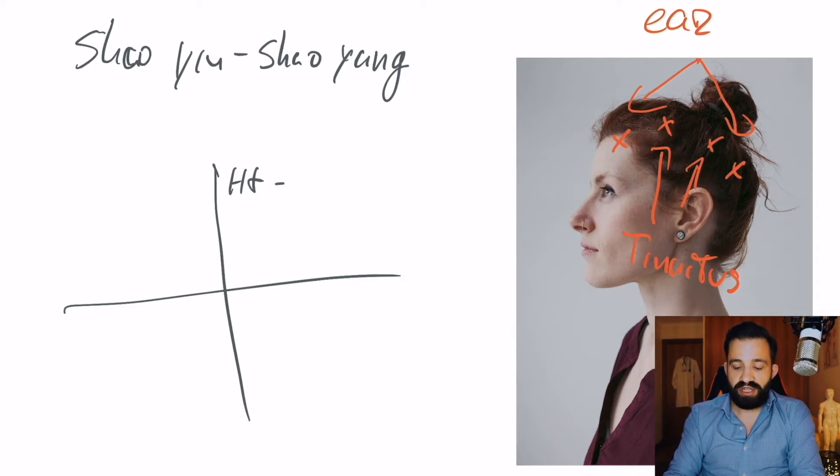So I looked for Asha points around heart 3 and also around heart 8. On the other side I went for triple warmer or Sanjiao, the Shaoyang of the hand and for the elbow area I searched for Asha points around triple warmer 10.